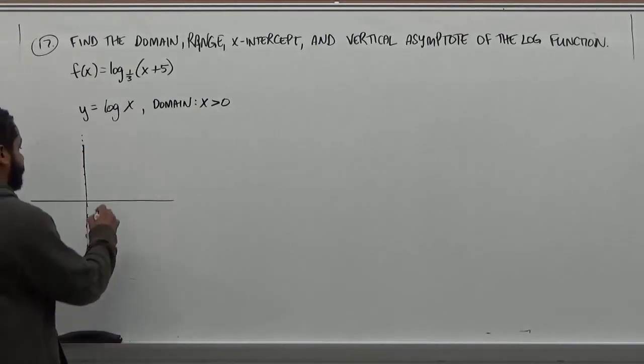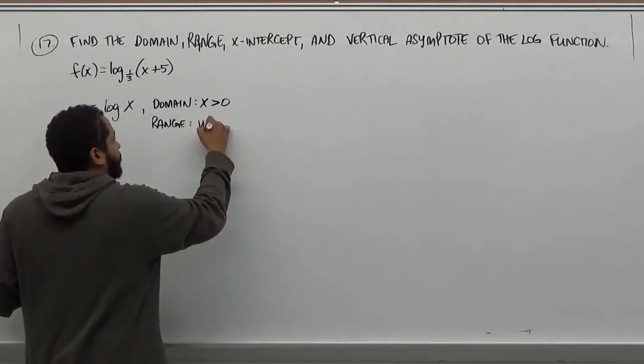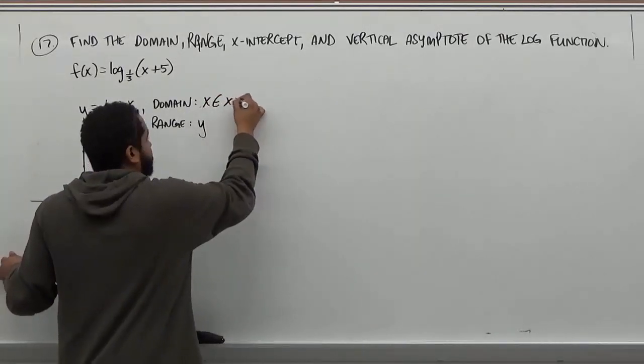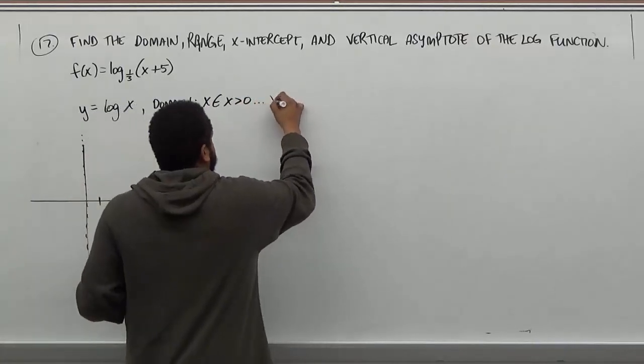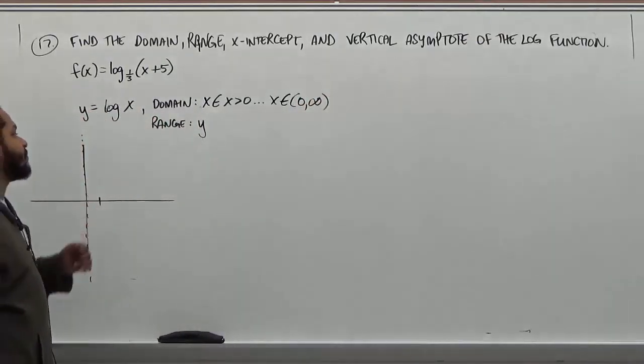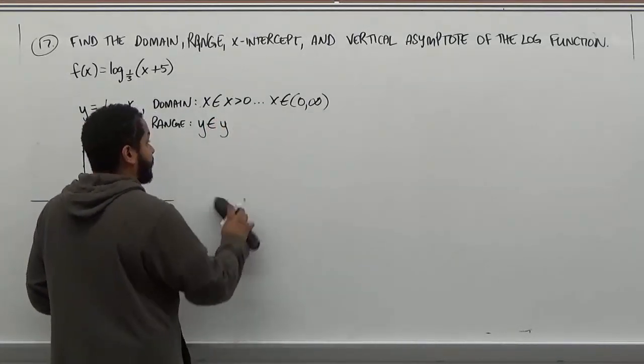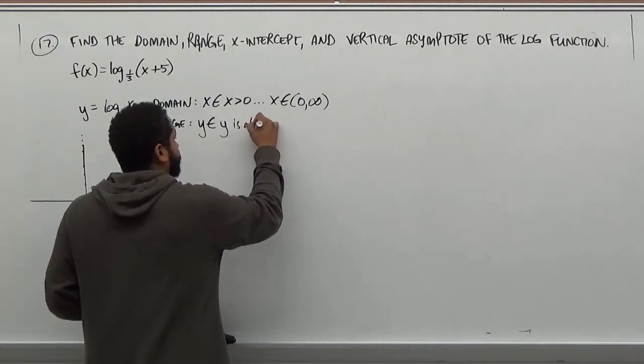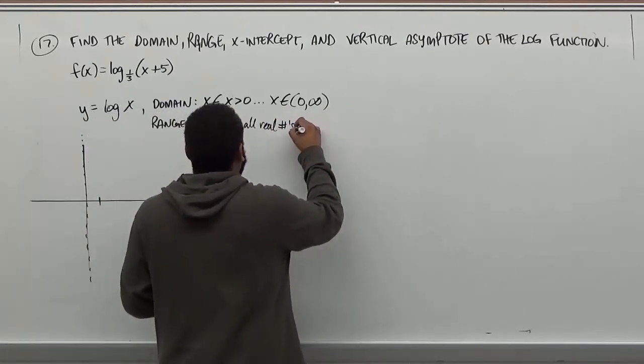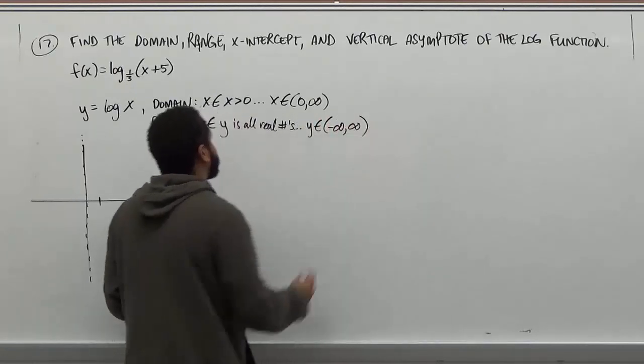Now the range of this function of log is always going to be from, so here we see x belongs to x being greater than zero, which in turn becomes x belongs to (0, infinity). And the range component, we know this is always going to belong to y being all values. And what this translates into is that y belongs to (-infinity, infinity), because it covers all values.